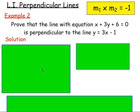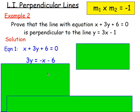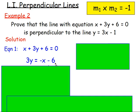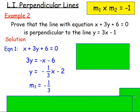Let's take equation one: x plus 3y plus 6 equals zero. To get the gradient, you need it in the form y equals mx plus c. Get rid of the x and the 6 by moving them to the other side, giving 3y equals negative x minus 6. Then divide every term by 3, giving y equals negative one-third x minus 2. The gradient of that line is negative one third.